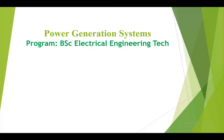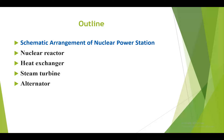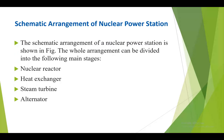Hello students, welcome to the course of power generation systems. Today we are going to study the schematic arrangement of a nuclear power station. In this we have the most important component, that is the nuclear reactor, then the heat exchanger, steam turbine and alternator. The schematic arrangement of the nuclear power station is shown in this figure.